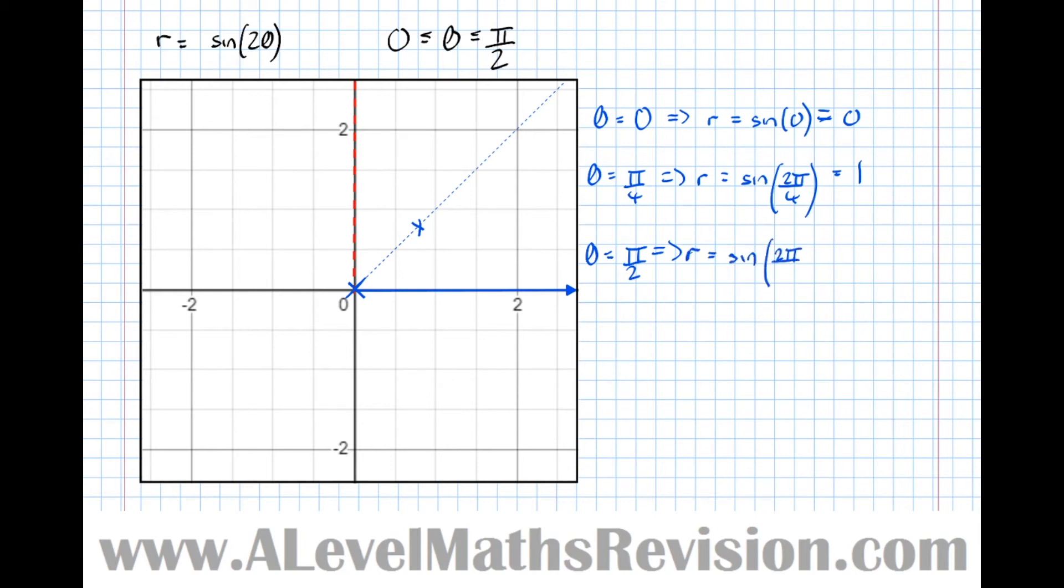So theta equals pi over 2 implies that r equals sine of 2 pi over 2, which is 0.